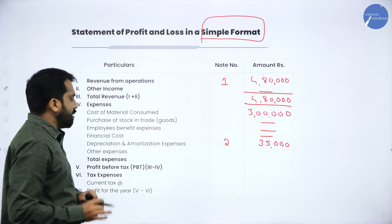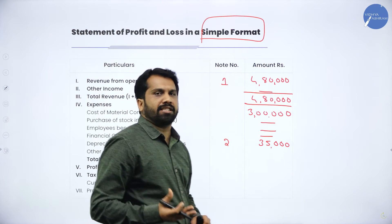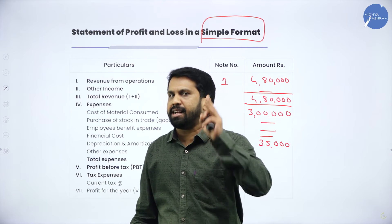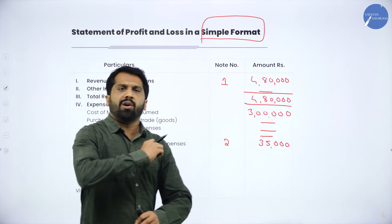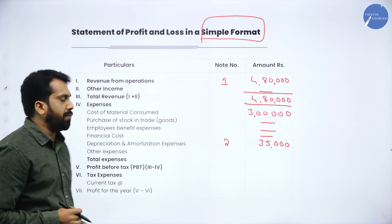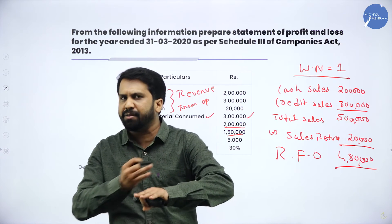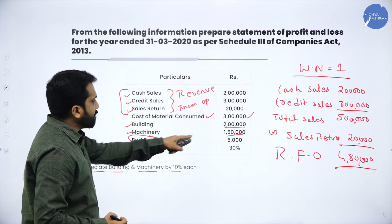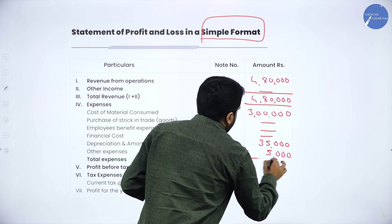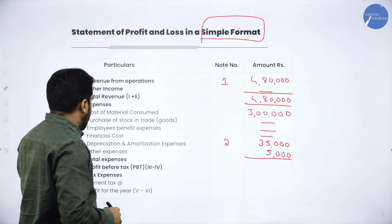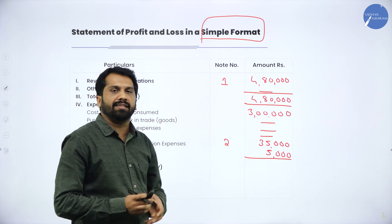Next is Other Expenses. All remaining expenses — fuel, audit fees, electricity, water, insurance, bad debts — all come under Other Expenses. Going back to the question, bad debts is given which comes under Other Expenses. Bad debts amount is 5,000. So Other Expenses is 5,000. Now all expenses are done. Total Expenses: 3,00,000 plus 35,000 plus 5,000 equals 3,40,000.